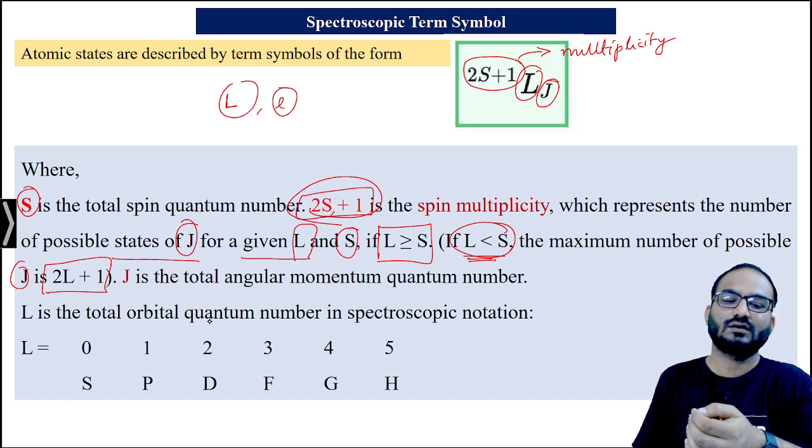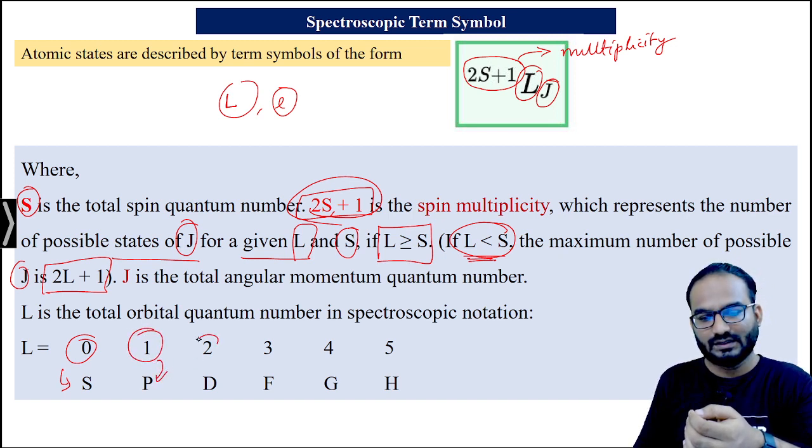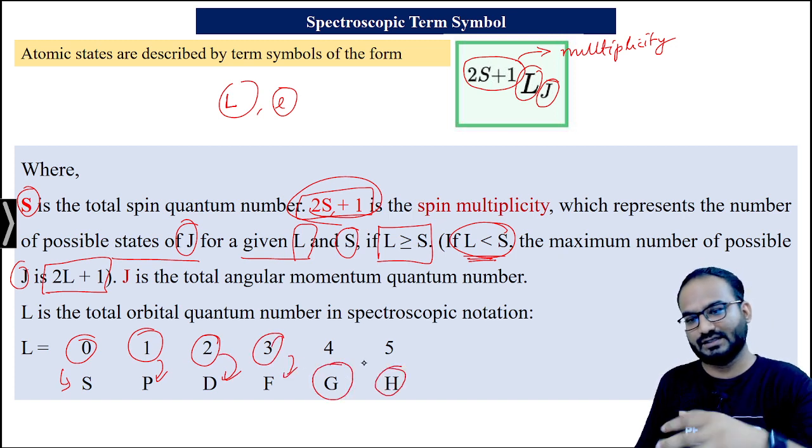L is the total orbital quantum number. The value of L=0 corresponds to S orbital, 1 to P subshell, L=2 to D subshell, L=3 to F, then G, H, and so on.